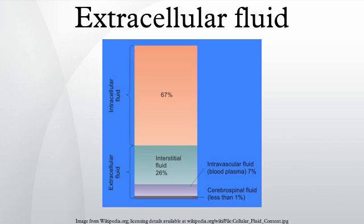The extracellular fluid also includes the transcellular fluid, which comprises about 2.5% of the ECF. In humans, the normal glucose concentration of extracellular fluid regulated by homeostasis is approximately 5 mmol per liter, and the pH is tightly regulated by buffers around 7.4. The volume of ECF is typically 15 L, of which 12 L is interstitial fluid and 3 L is plasma.